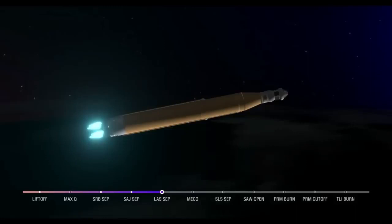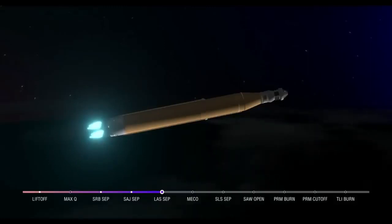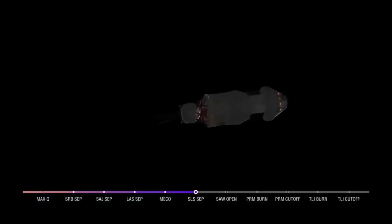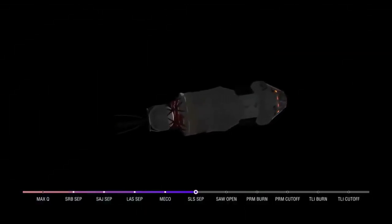And we have confirmation of core stage main engine cutoff. Orion is now in Earth's orbit. The flight dynamics officer reports that we have a nominal main engine cutoff. And we just heard the call for core stage separation. That means Orion and the interim cryogenic propulsion stage are now flying free from the core stage of the space launch system. The next milestone will be solar array deploy approximately 18 minutes after liftoff.